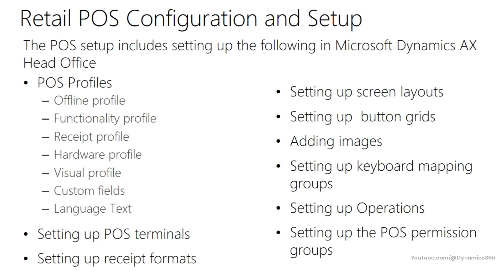Other setup activities for retail POS that can be performed at the head office include: setting up POS registers or terminals, setting up receipt formats, setting up screen layouts, setting up button grids in screen layouts, adding images that appear on the retail POS register, setting up keyboard mapping groups, setting up operations which can be performed on the retail POS, and setting up POS permission groups which determine the access for various transactions by users at the retail POS.